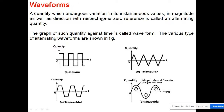A quantity whose instantaneous values in magnitude as well as direction are continuously changing with reference to any reference point is known as an alternating quantity, and the graph of such a quantity against time is known as a waveform. I am representing here four types of waveforms: square, triangular, trapezoidal, and sinusoidal — but we prefer the sinusoidal.